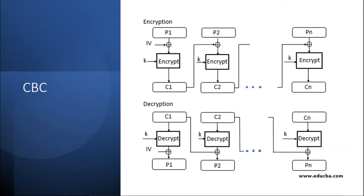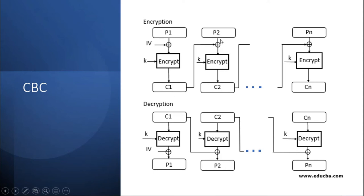In the CBC encryption process, we have plaintext block P1, an initial vector IV for the first round. It performs an XOR operation, and after getting the XOR result, you encrypt that result with key K to get C1, the ciphertext for the first block. For the second block, instead of IV, you use C1 to do the XOR operation. So the encryption of P2 depends on the ciphertext generated from the first block. You XOR C1 with P2, encrypt using key K, and get ciphertext block C2. This process continues up to the Nth block.